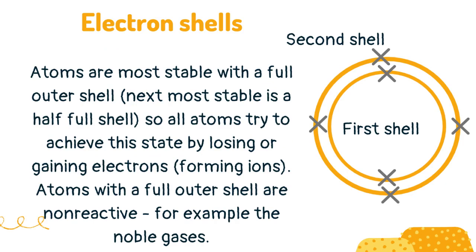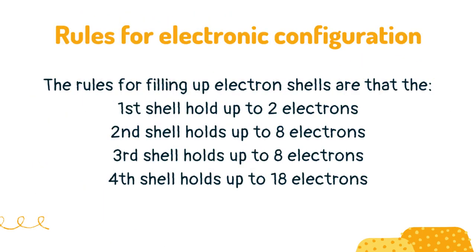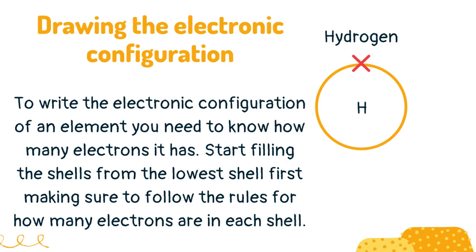Atoms with a full outer shell are non-reactive — for example, the noble gases. The rules for filling up electron shells are: the first shell holds up to 2 electrons, the second shell holds up to 8 electrons, the third shell holds up to 8 electrons, and the fourth shell holds up to 18 electrons.